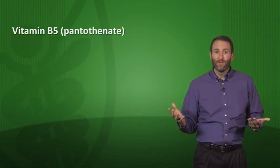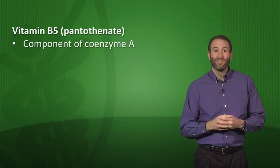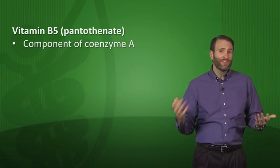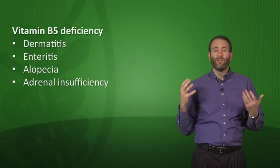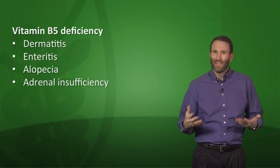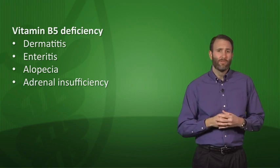Moving on to vitamin B5, also known as pantothenate. It's a component of coenzyme A, which functions in the transfer of acyl groups. If you get a deficiency, you see nonspecific symptoms: dermatitis, enteritis, alopecia, and even some adrenal insufficiency.